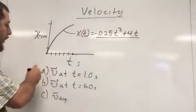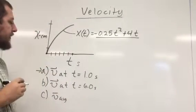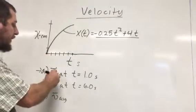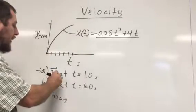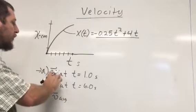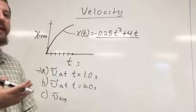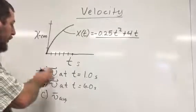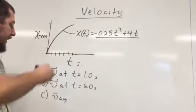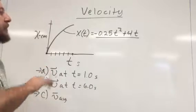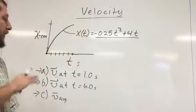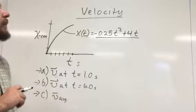Before we had the instantaneous subscript down here. Anytime that I drop that, we're now assuming I'm asking for the instantaneous velocity. So part A and part B here are both wanting the instantaneous velocity, and then part C wants the average velocity over the course of the whole trip. Let's see how to calculate these quantities.